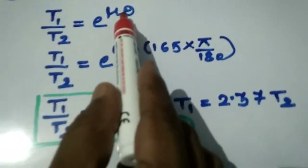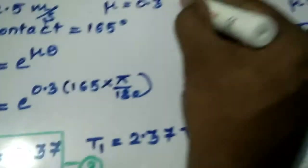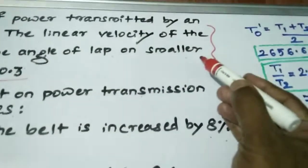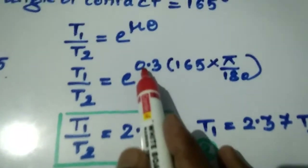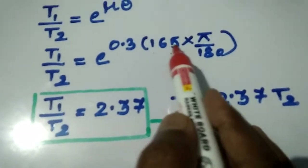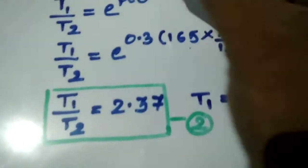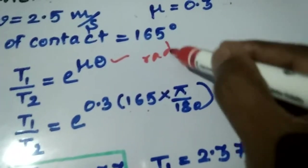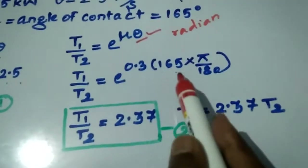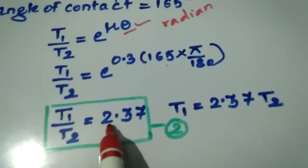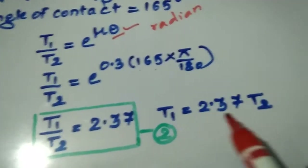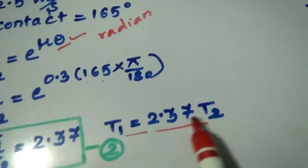For the second equation, T1 by T2 equal to e raised to mu theta. The coefficient of friction is 0.3 and lap angle is 165 degrees — you must convert this to radians. After calculation, you get T1 by T2 equal to e raised to 2.37. This gives T1 equal to 2.37 T2. Take this as equation 2.